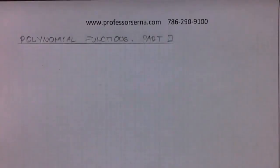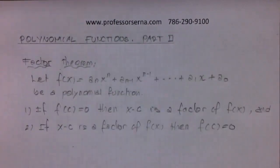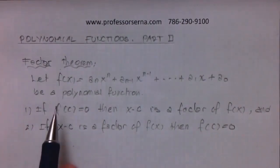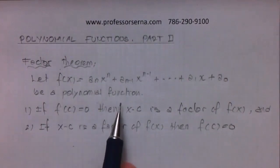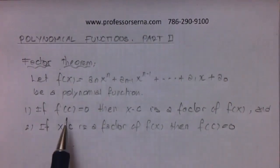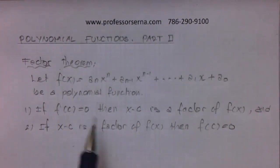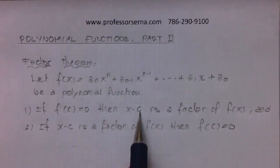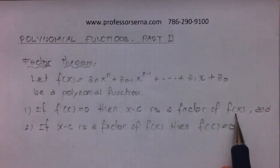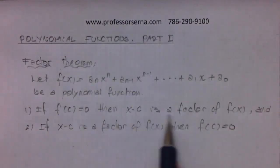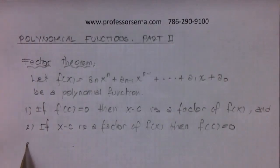To do that, we are going to need three theorems. The first theorem is called the Factor Theorem. It says that if f(x) is a polynomial function, and the value of the polynomial for some value x equals c is zero, then x minus c is a factor of the polynomial. The other way around is also true, but let's concentrate on this one.